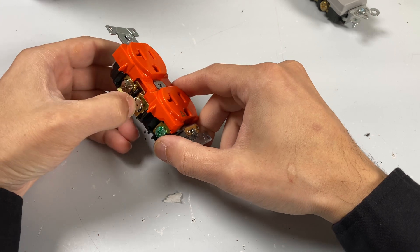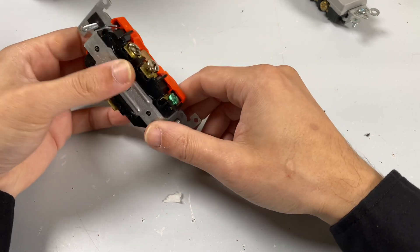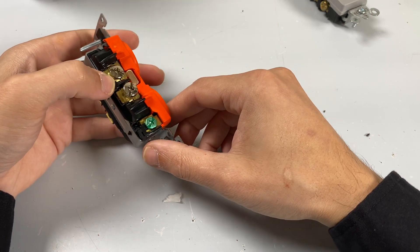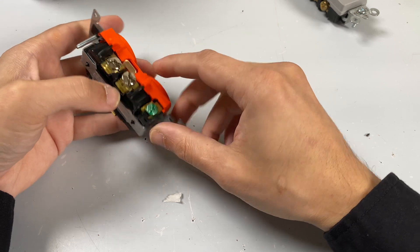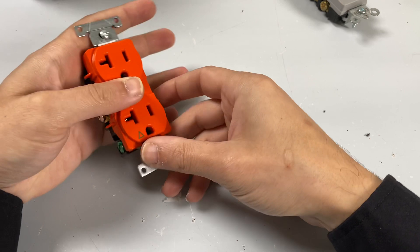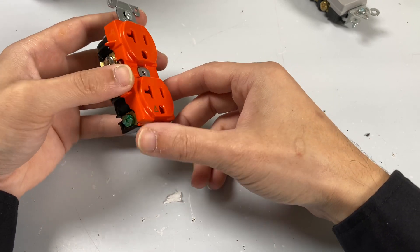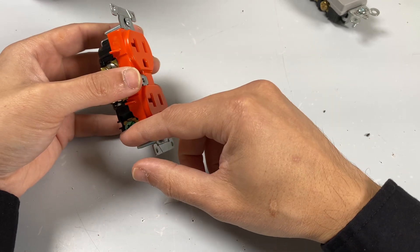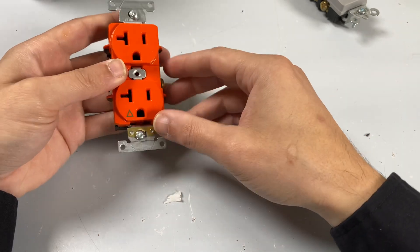That being said, if you have an older home or you have an older installation that only has a neutral and a hot wire running to your box and it's grounded at the box, this outlet really isn't going to help you because you're essentially grounding it to the box itself.